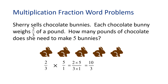Ten divided by three equals three with a remainder of one. So we write the remainder over the denominator to represent the fractional part. Ten-thirds equals three and one-third. Sherry needs three and one-third pounds of chocolate to make five chocolate bunnies. Yummy!